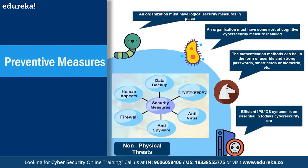Preventive measures: once risks and threats are identified, how do you address and stop them? The whole business of cybersecurity is trying to protect someone and help them. An organization must have logical security measures. Even the Pentagon and FBI get hacked thousands of times every day — so it is not simple. There is something called 'reasonable assurance.' An organization must also have cognitive cybersecurity — the ability to think on its own rather than purely depending on outside help.